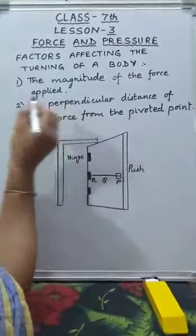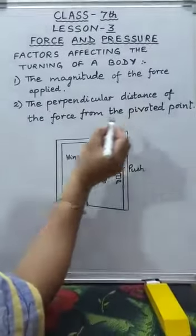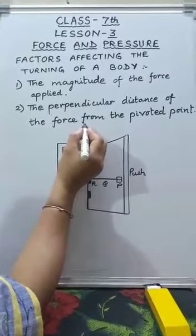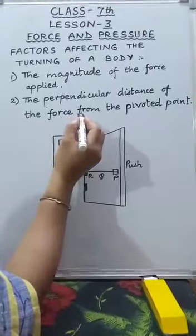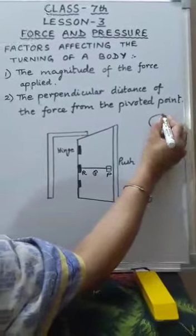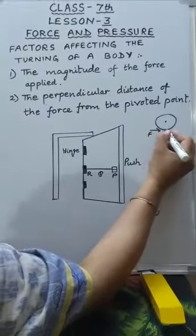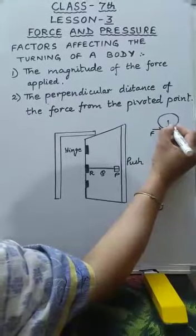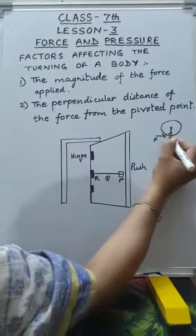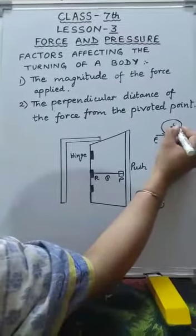More force, more turning effect. Second factor is the perpendicular distance of the force from the pivoted point. Larger the perpendicular distance of the point at which the force is applied from the pivoted point, more is the turning effect on the body. Suppose this body is fixed at the pivoted point and I apply force at some point — the turning effect depends on this perpendicular distance, as well as the force and the pivoted point O.